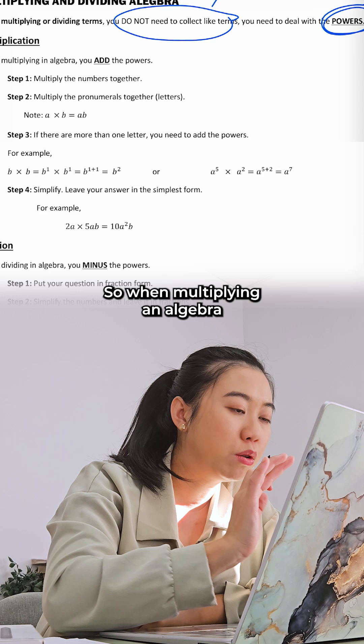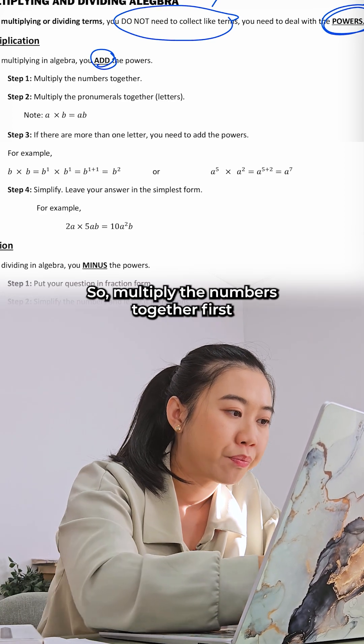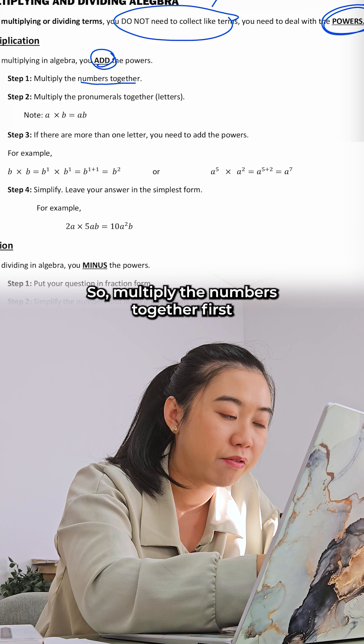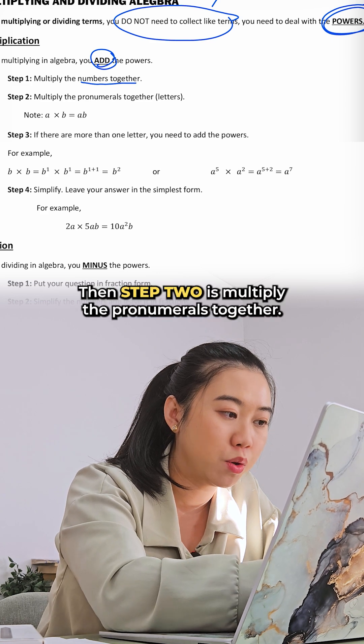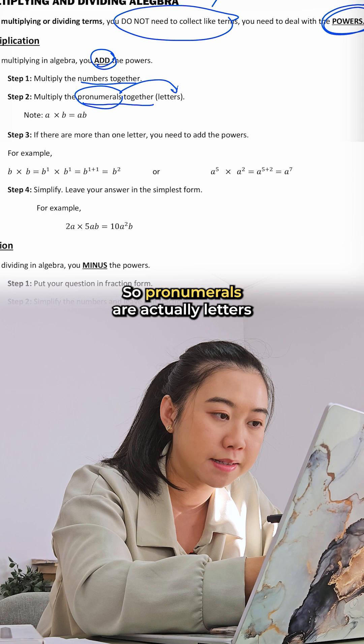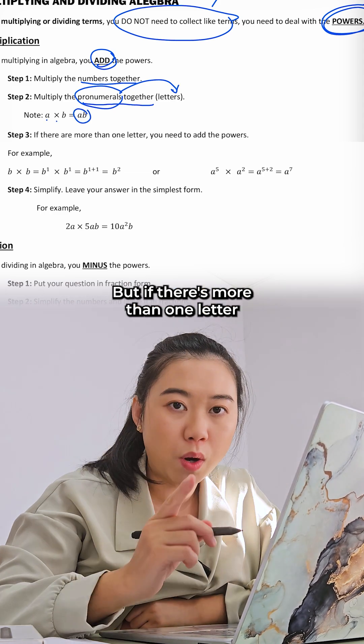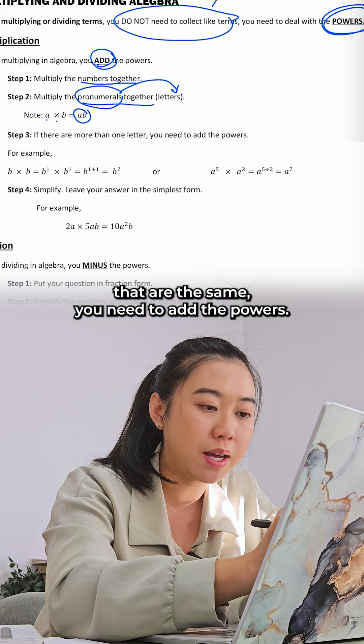Let's look at multiplying. When multiplying algebra, you need to learn to add the powers. Multiply the numbers together first as step one. Then step two is multiply the pronumerals together. Pronumerals are actually letters. For example, a times b is ab. But if there's more than one letter that are the same, you need to add the powers.